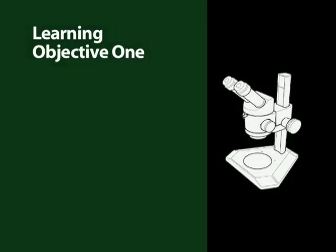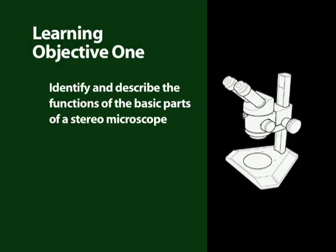Learning Objective 1: The learning objective in this section is to identify and describe the functions of the basic parts of a stereo microscope.